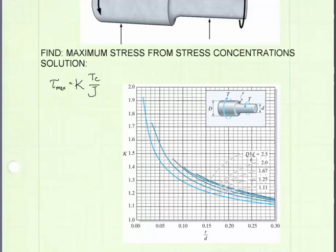To use this chart we're going to use a couple of ratios that are based on the geometry of our problem. First, we need the ratio of the large diameter to the small diameter. That will allow us to select which curve we're going to use to get our K value. The other ratio is the fillet radius over the small diameter ratio. Let's go ahead and find those now.